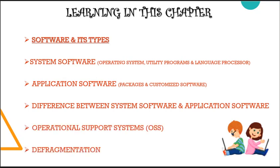We'll also cover the difference between system and application software, operational support systems, and defragmentation. All computer systems consist of two major components: hardware and software. Hardware refers to the physical equipment necessary for performing various operations like input, output, and storage. Software refers to a set of computer programs required to enable the hardware to work and perform these operations effectively.